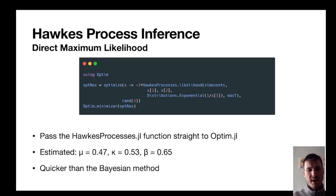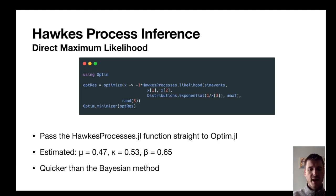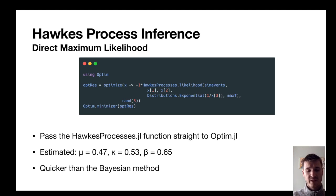If instead you wanted to use a maximum likelihood method, we can pass the likelihood function straight into the optimize function from the Optim package and use this to find the best fitting parameters — and again we get parameters similar to the true ones from the simulation. This is quicker than the Bayesian method, so if you have a lot of events to fit a Hawkes process to, this might be preferable.